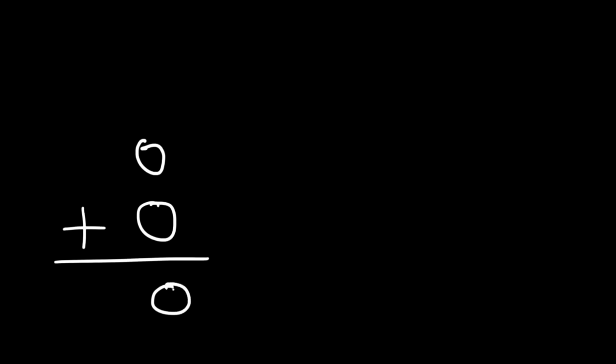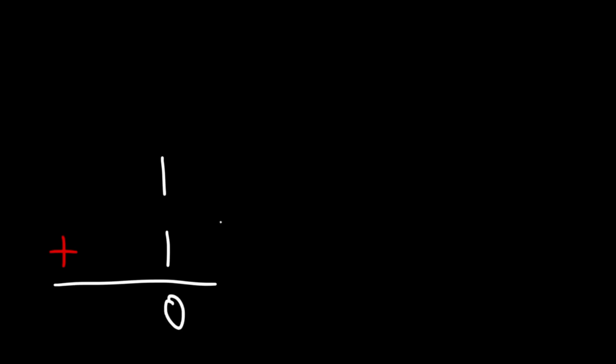So let's start with the basics. What's 0 plus 0? 0 plus 0 is 0. Now what about 1 plus 0? How can we add those two binary numbers? 1 plus 0 is 1. Now there's some other basic rules to go over. What about 1 plus 1? In this case, we'll need to carry over. 1 plus 1 is going to be 0, but you need to carry over a 1, and so you get 10.